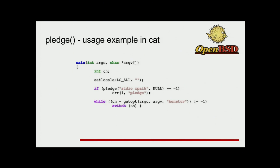Here is how Pledge is used in CAT. As you can see, it's very easy to use — you just need to analyze which promises the program needs. CAT is very simple: it just needs some allocations, which is why the 'stdio' promise, and it also needs some access to disk, which is why the 'rpath' promise. This program is sandboxed pretty well. We can read arbitrary files if we find some vulnerability in CAT, but we cannot do much more — we cannot send that data, we cannot override the data. Everything looks fine.